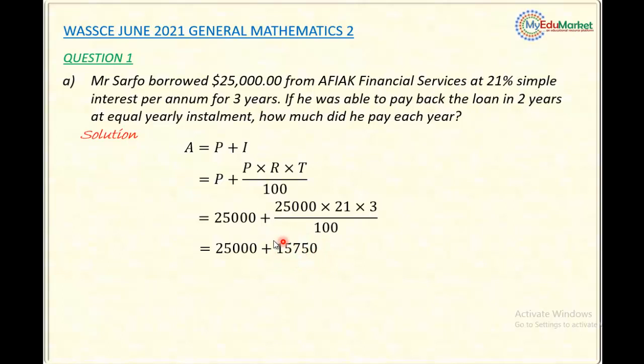Then I'll add it to the original money borrowed, which will give me the final amount. Adding this, I'll now have $40,750. So this $25,000 after three years will now equal $40,750.